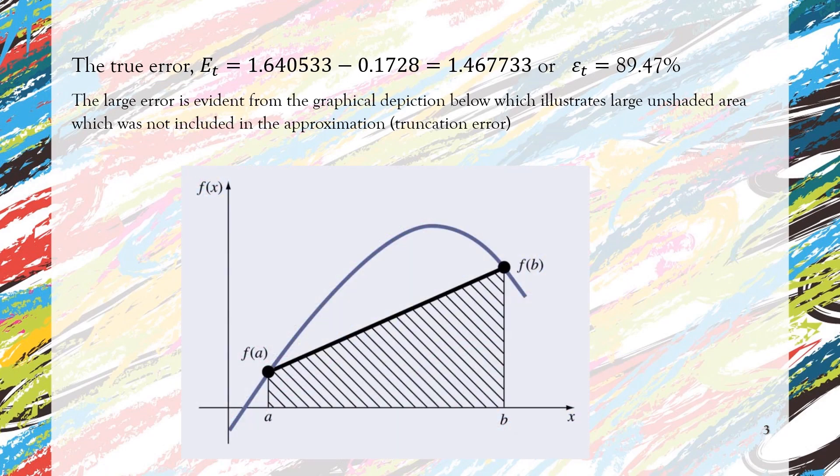So we know that the true error is large, and the percentage true error is also large. This is simply because of the truncation error, as can be seen from the figure down there. When we apply a single application of trapezoidal rule, there is one trapezoidal shape—you can see it clearly there—and we have the unshaded area which we did not include in our approximation.